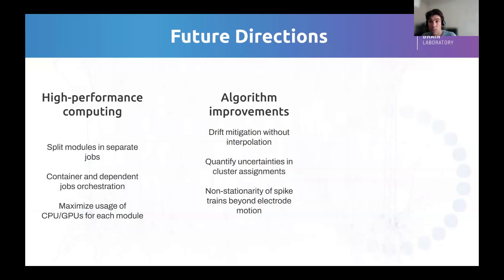Another avenue is to try to output some uncertainties about the cluster assignments. Some spikes, it's really clear that they belong to a cluster. Some others, there is a bit of indecision. It would be nice to have a measurement of this, as a normal classifier would have. The last thing is how to handle the non-stationarity of the spike trains beyond the drift itself. Right now, we try to account for the electrode motion, but more and more we see in our datasets and in other datasets that the units, the amplitude varies as a function of time, the waveform shapes as well, and how to account for this in the clustering.